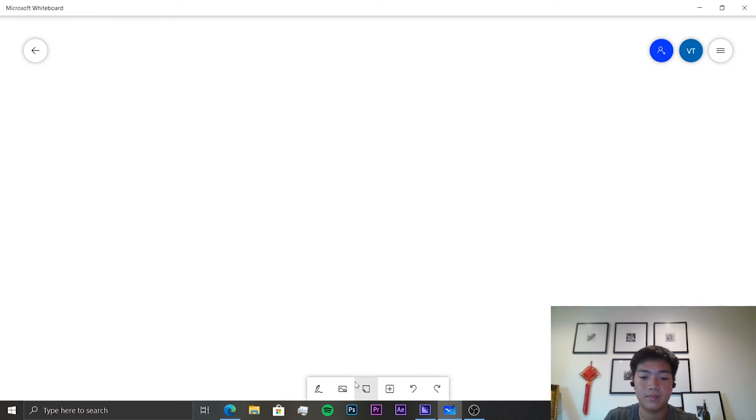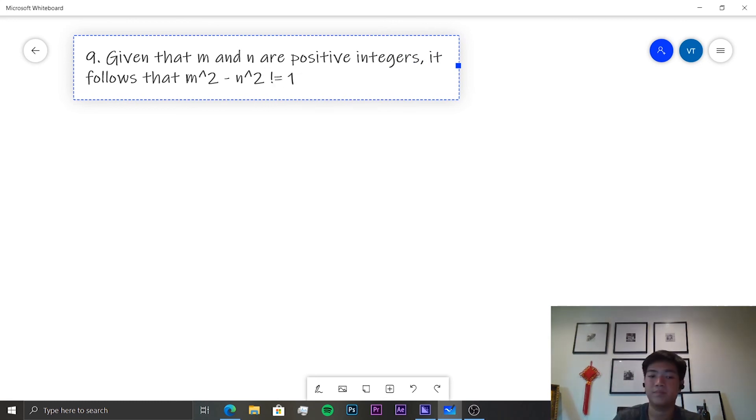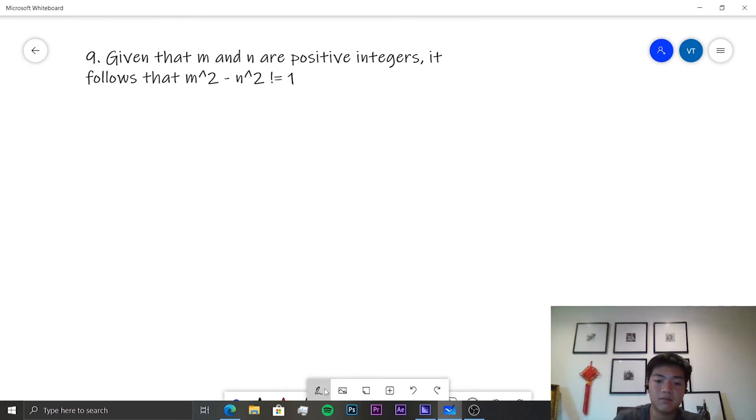Finally, our last problem will be, given that m and n are positive integers, it follows that m squared minus n squared is not equal to 1. Okay, well, this looks pretty straightforward. Let's assume that there are some integers m and n where the difference of their squares is equal to 1.